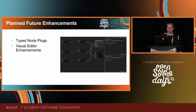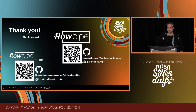We are planning to integrate more static type code and typed node plugs into the framework, which would allow a better user experience in the Flowpipe editor to view and adjust node parameters, and also adds better MyPy and Pylint compatibility for developers. Additionally, we are planning to enhance the editor's capabilities to support graph generation and execution in the visual editor directly. Thank you very much — we are happy for any contributions, and I will be around if you have any questions.